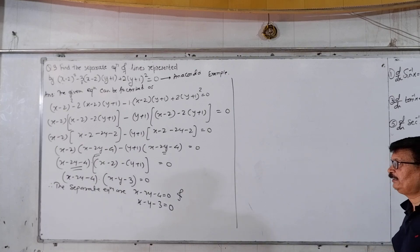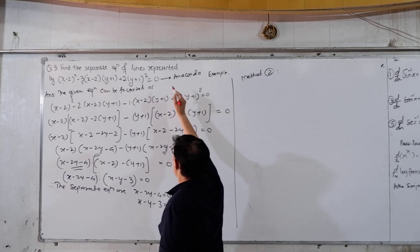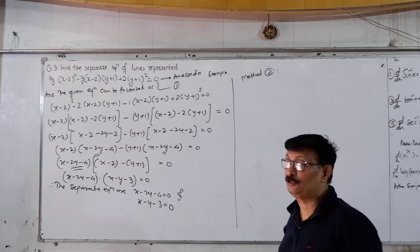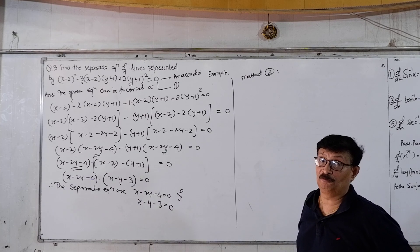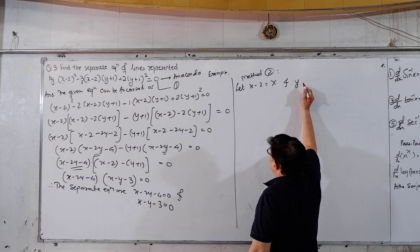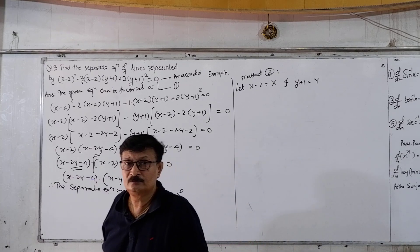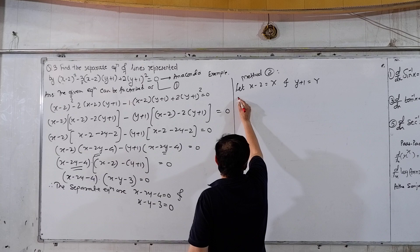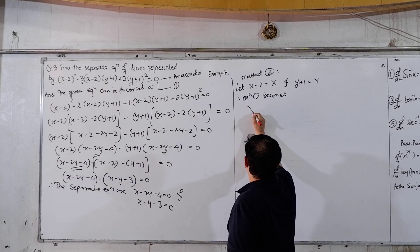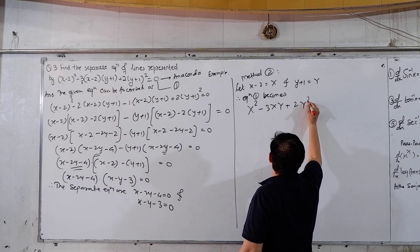Now there is another method — Method 2. You can call it the Anaconda equation. You can see: one factor is (x minus 2) and one is (y plus 1). So we can use capital letters. Let small (x minus 2) equal to capital X and small (y plus 1) equal to capital Y. Therefore equation 1 becomes: X squared minus 3XY plus 2Y squared equal to 0.